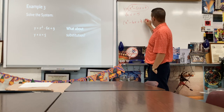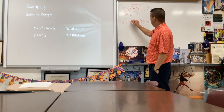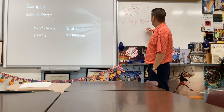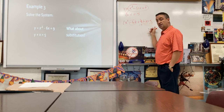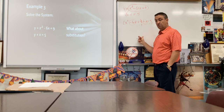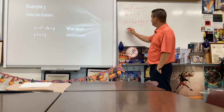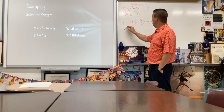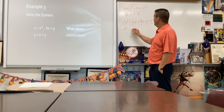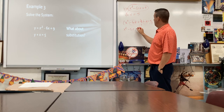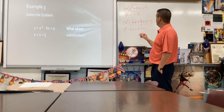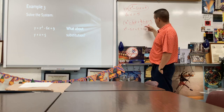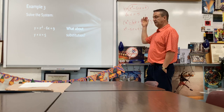So x squared minus 6x plus 9 is going to replace y in the second equation, making it x squared minus 6x plus 9 plus x equals 5. Just like substitution works in any math problem, you replace something with an equivalent expression. Now I've got an equation with only one variable — only x. I combine like terms and subtract 5 over, giving me x squared minus 5x plus 4 equals 0.